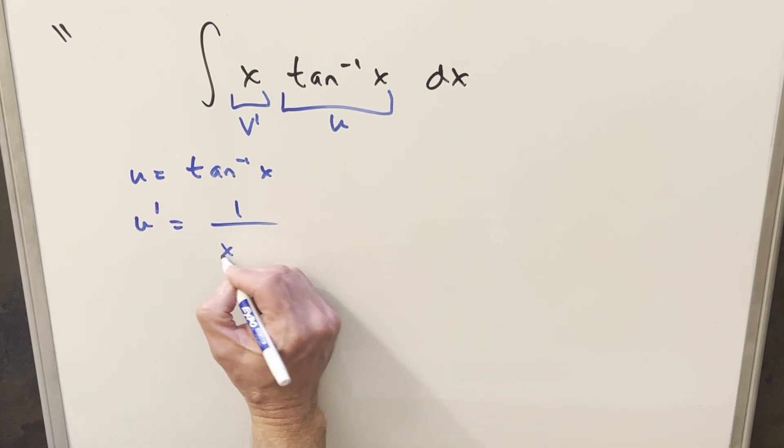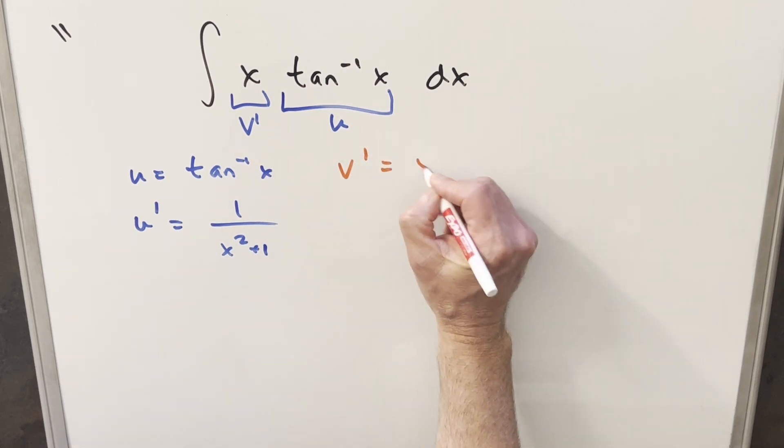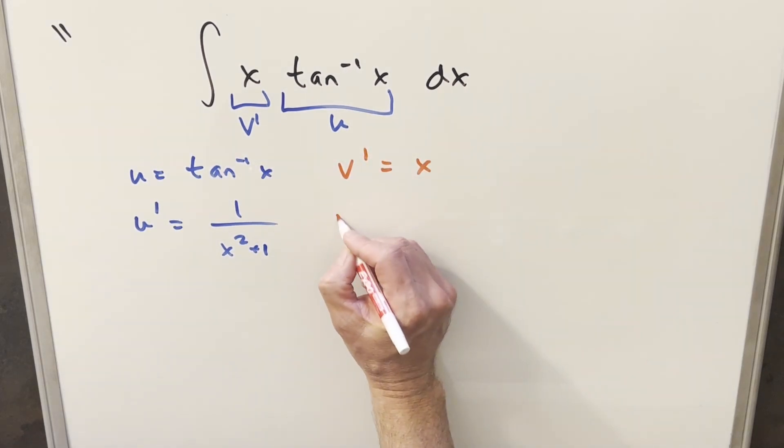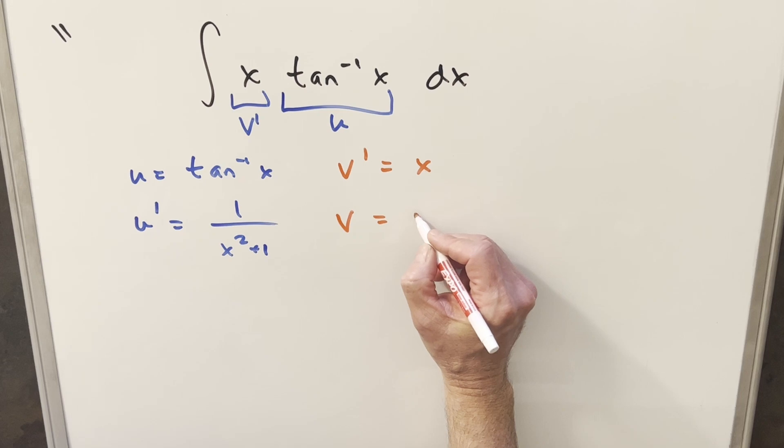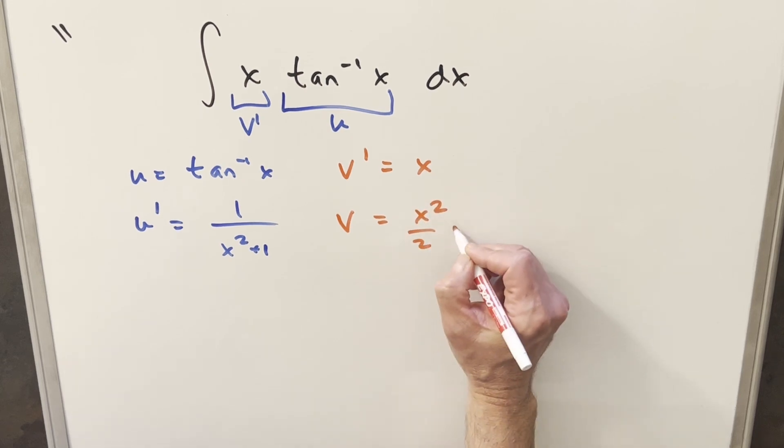This is going to give me 1 over x squared plus 1. And then we'll come over here, so for my v prime value, we'll just have, this is going to be equal to x. We'll integrate this for our v, and then we're going to get x squared over 2, but plus c, we're going to keep that plus c for now.